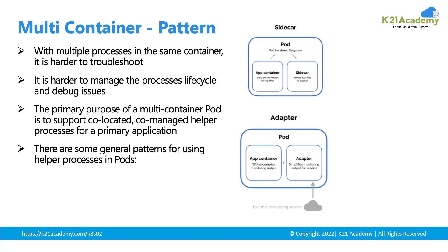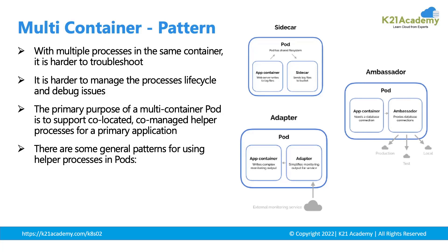Another pattern is an adapter type of pattern, where one container simplifies the output from the actual application so that it can be understood by a third-party application. If you have ten applications — app 1, app 2, app 3 — all giving data in entirely different formats, a third-party application performing metrics analysis becomes difficult. The adapter container takes the data and transforms it into the format the third-party application is expecting. This increases adaptability for that application, and that is the reason it is called an adapter type of pattern.